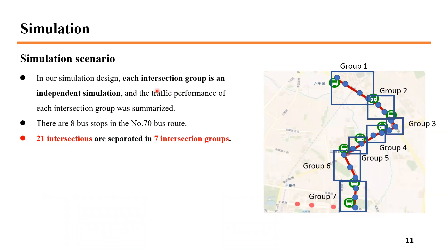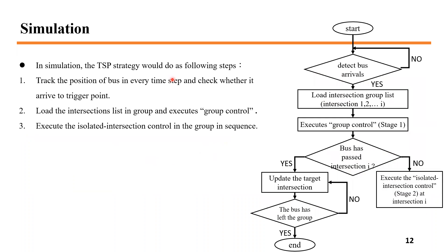In the programming architecture design, the TSP strategy serves one intersection group at a time, so each intersection group is an independent simulation and its performance is calculated separately. Following the group definition in stage one, 21 intersections in this case are separated into seven intersection groups. In the simulation, the TSP strategy follows these steps: first, check the bus position at every time step and check whether it has arrived at the checkpoint of the group; then load the intersection list and perform group control; finally, perform isolated intersection control in sequence until the bus leaves the group.